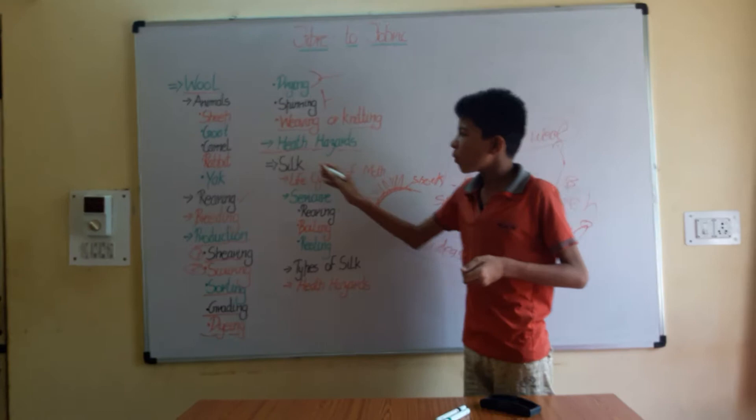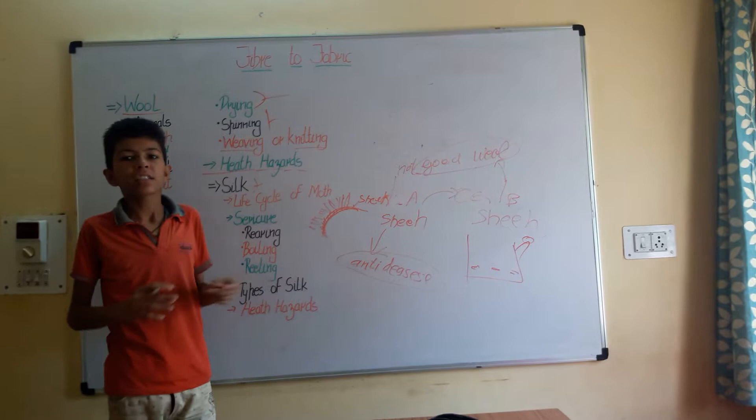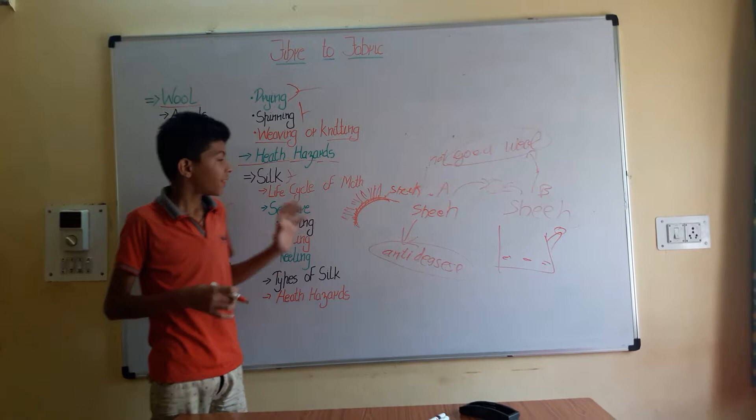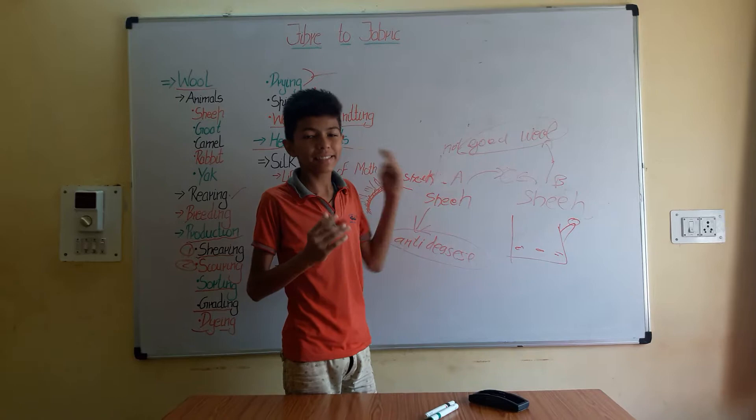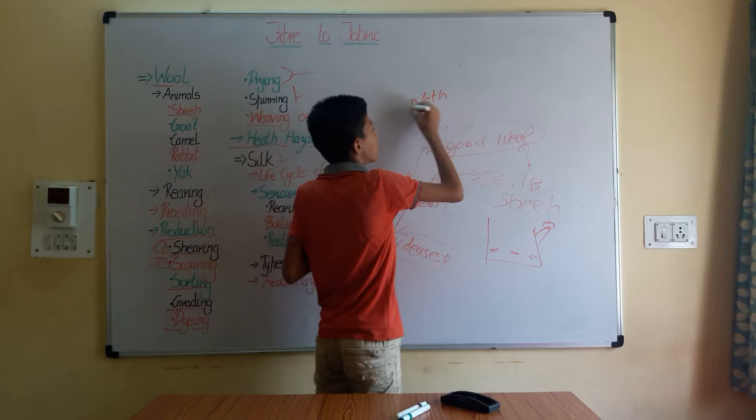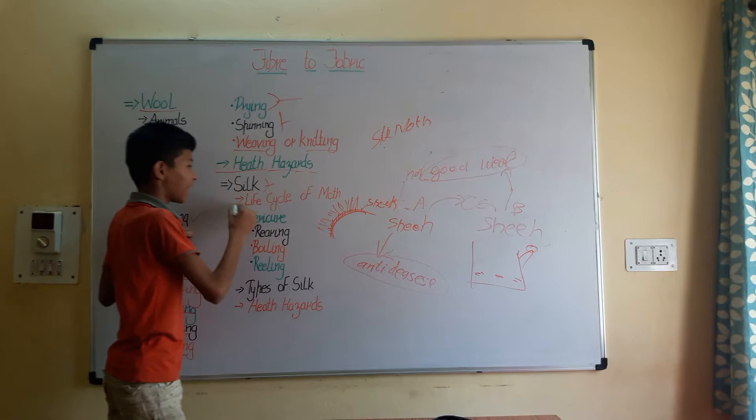Now we have silk. There is a saying — a face as smooth as silk. Silk is a very smooth fiber. It comes from an animal insect called the silk moth.